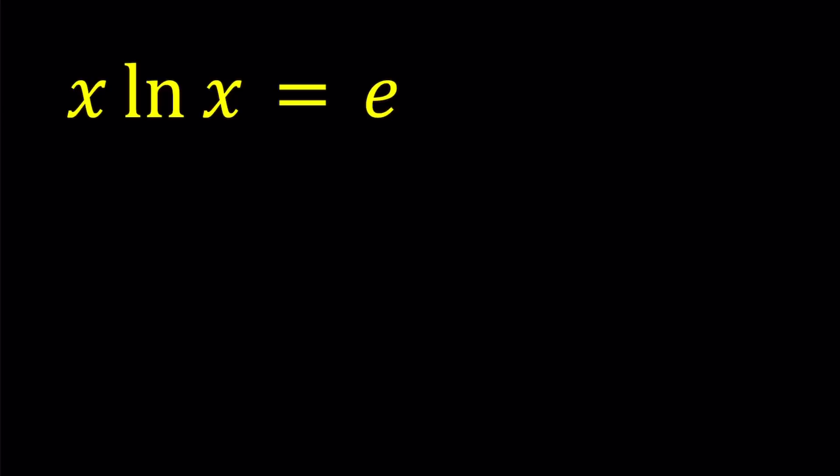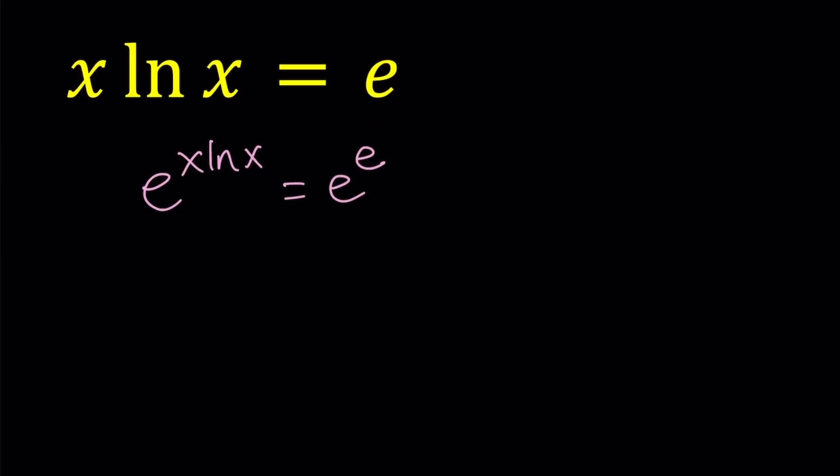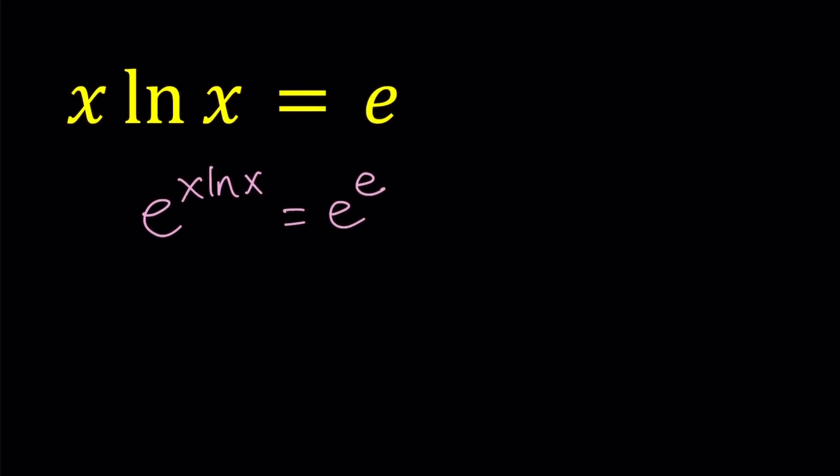So let's go ahead and do a little bit of manipulation on this one. Since we have the ln function here, which is the natural logarithm, I would like to raise both sides to the power e. So let's do e to the power x ln x equals e to the power e. And e is Euler's number, which is about 2.7.